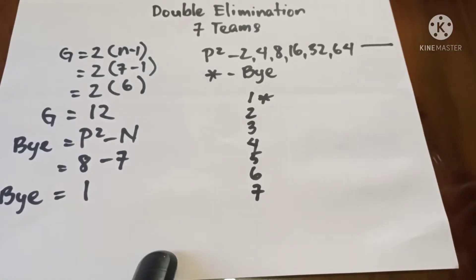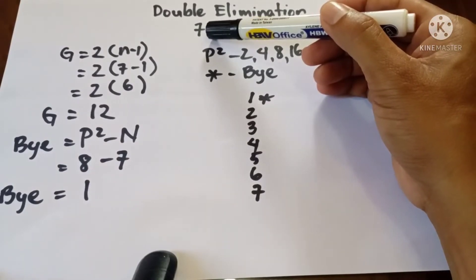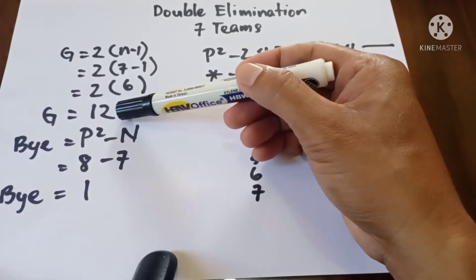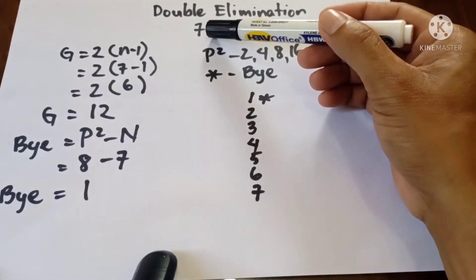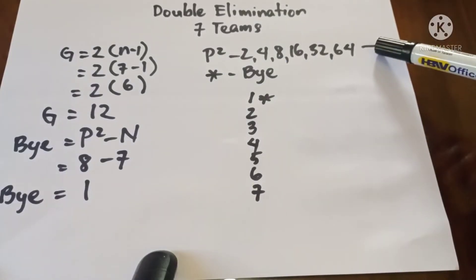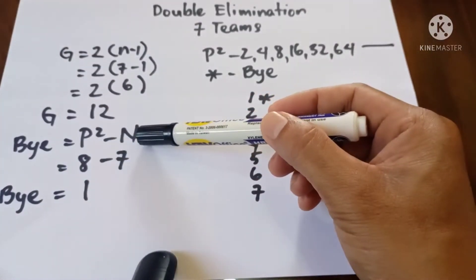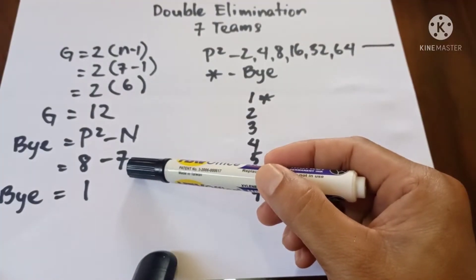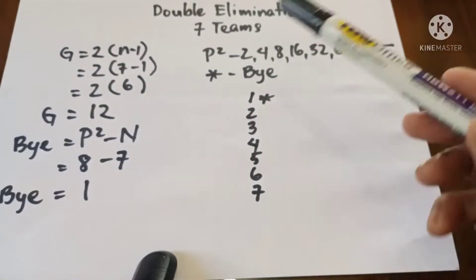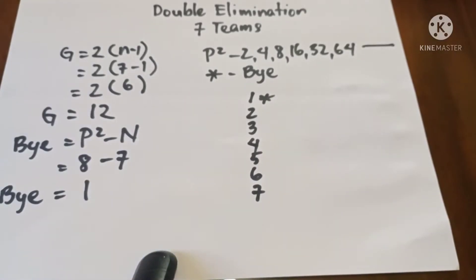Hello everyone. This is double elimination for seven teams — seven entries. We have 12 games. Since seven is not included in the powers of two, we need a bye. The bye equals the next higher power of two minus n. The next higher power of two above seven is eight, so eight minus seven equals one — meaning we have one bye.